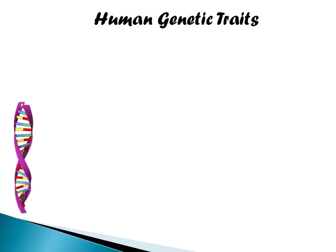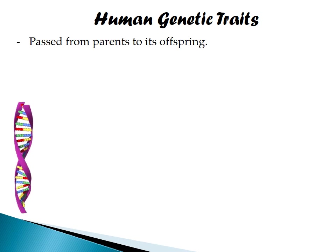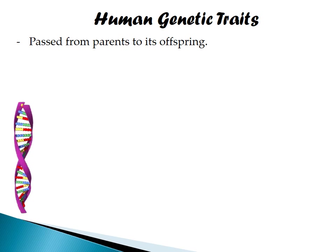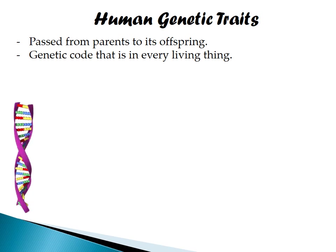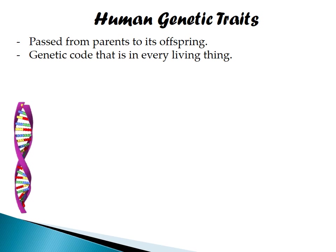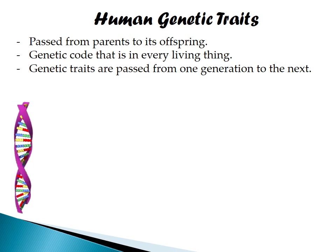Now let's proceed to our first subtopic, which is the human genetic traits. Human genetic traits are passed from parents to their offspring. At the same time, these genetic traits are all contained within DNA, which is a sort of genetic code that is in every living thing. Most life comes from another thing or another person — without your father or your mother, you would have not been born. That is how genetic traits are passed from one generation to the next.